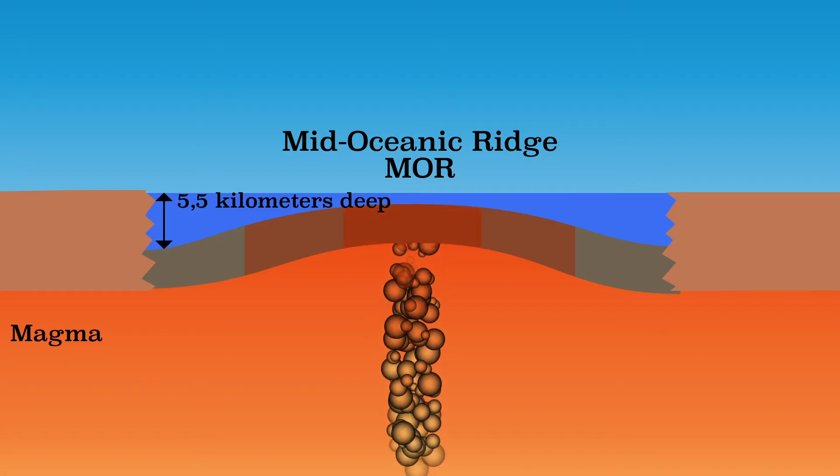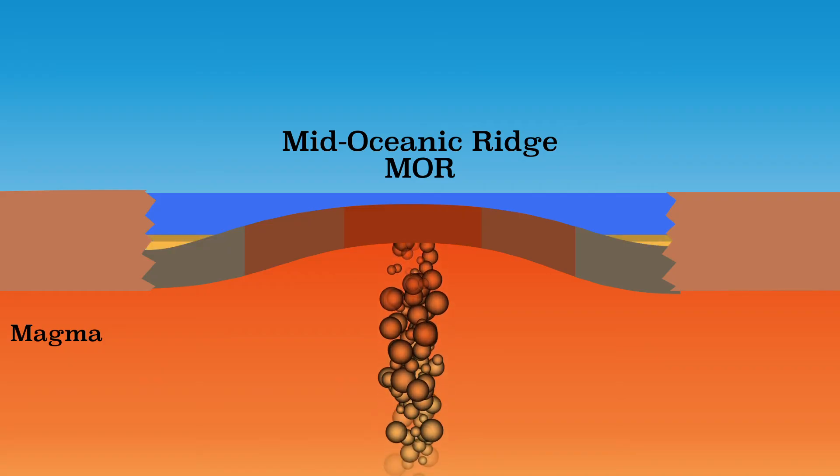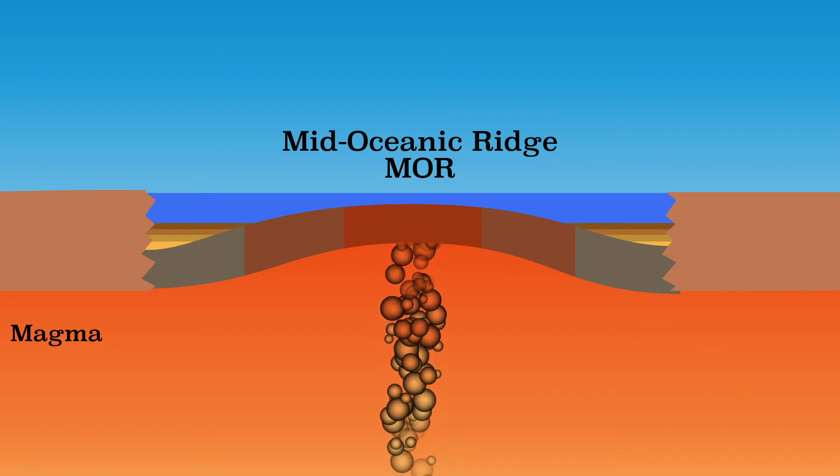The part of the oceanic crust that is further away from the mid-oceanic ridge is already older, which means that more sediment layers have been deposited there. While with the younger crust, closer to the mid-oceanic ridge, fewer sediment layers could be deposited. This is proof that the crust at the mid-oceanic ridge is younger and therefore originated there.